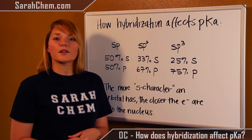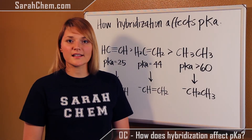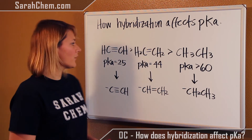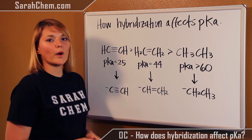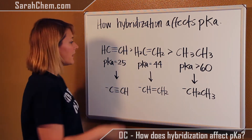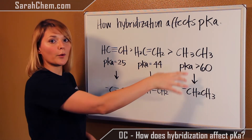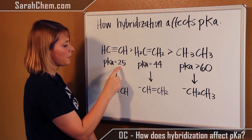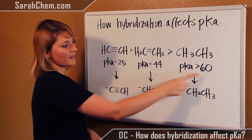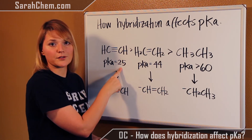Let's take a look at how this will affect the pKa and apply it to an actual example. On an exam, you might be asked to explain why this compound is more acidic than the other one. Remember, you can tell it's more acidic because the pKa shown is a much lower number than 60. The lower the number, the more acidic the compound.